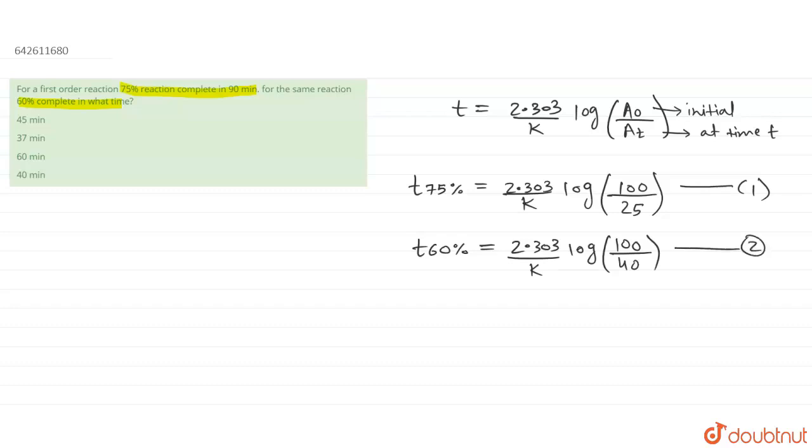If we divide equation 2 by equation 1, what we are going to get is t₆₀% divided by t₇₅% will come out to be, the common things will get canceled out. Only the things which are going to be left are the logarithm terms.